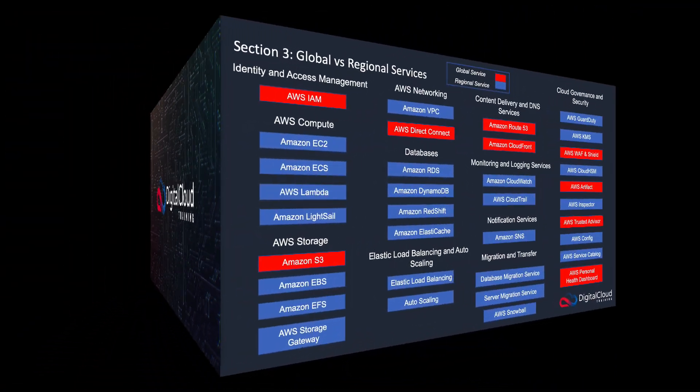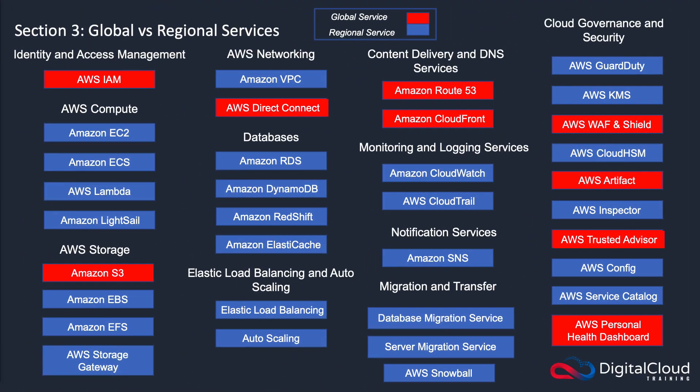AWS services have either a global or a regional scope. What that means is that they're administered either in one place globally or they're administered in different regions. The services highlighted in red here are the ones that are global services. Most services are actually regional, but these ones are global.